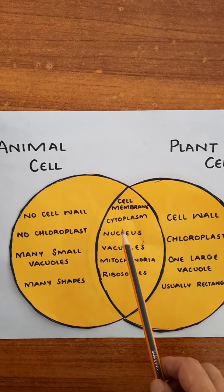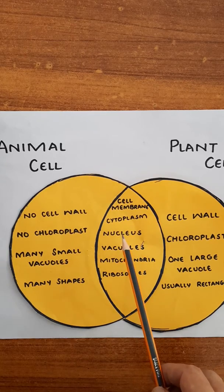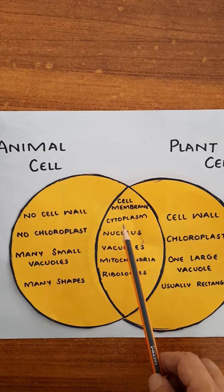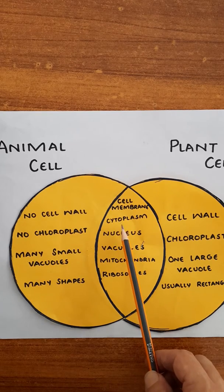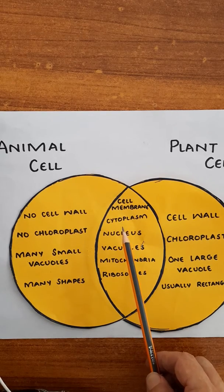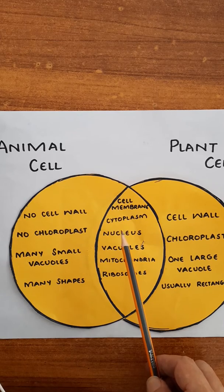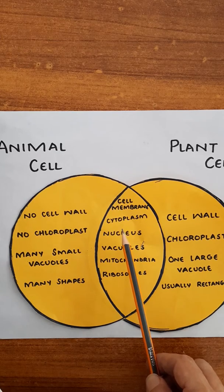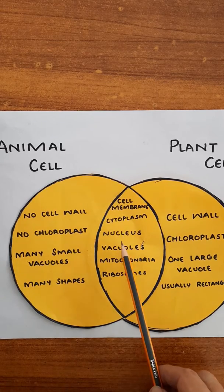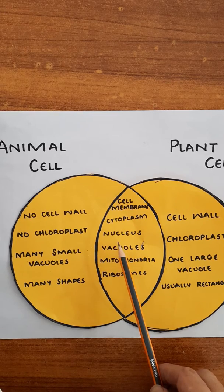Inside the cell we have cytoplasm. Cytoplasm is a jelly-like substance in which all the parts of the cell — called the organelles — are suspended.